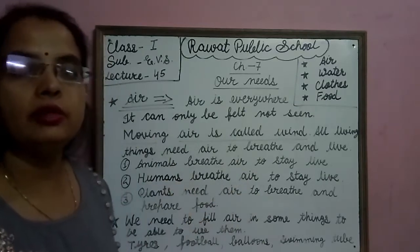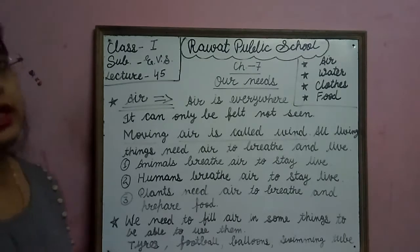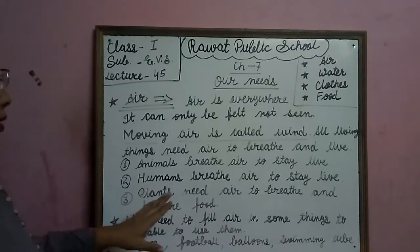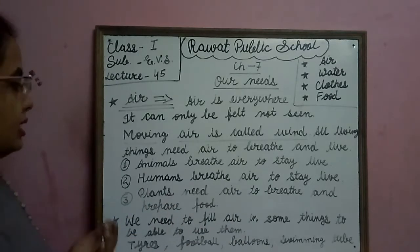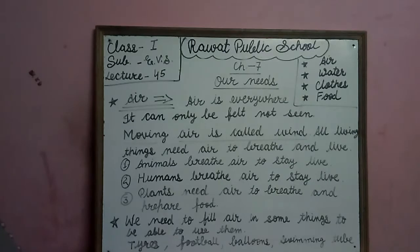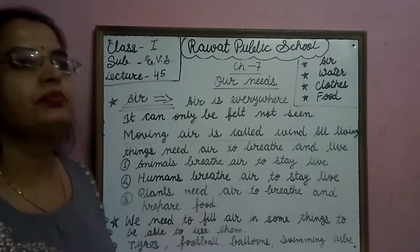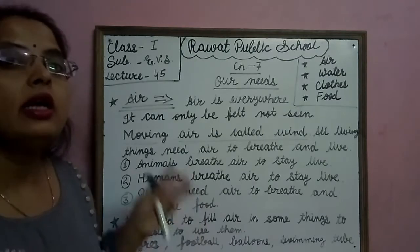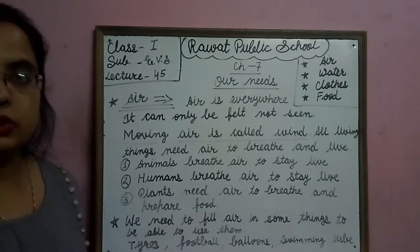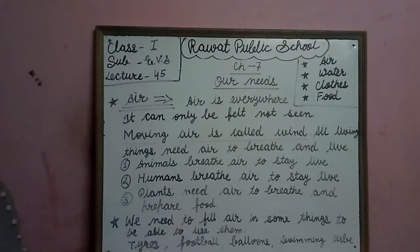Number two: Humans breathe air to stay alive. Aadmiyo ko jivit rahne ke liye Air ki zarurat hooti hain. Number three: plants need air to breathe and prepare food. Plants ko saans lene ke liye aur apna food banane ke liye Air ki zarurat hooti hain. And we need to fill air in some things to be able to use them — jaise tires hoti hain, tires mein air fill hoti hain. Football mein bhi air fill hoti hain.